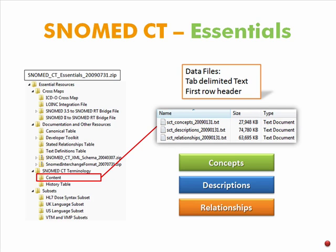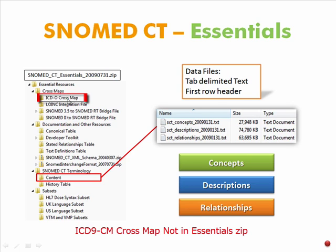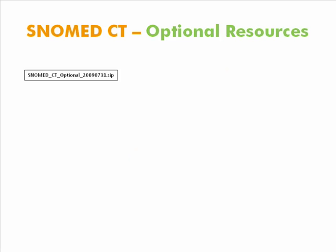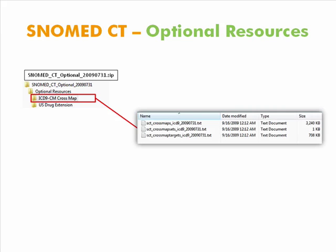One of the most important things to note is there are files provided by the NLM that have maps or cross-references from SNOMED CT to ICD-9-CM. It is not in the SNOMED CT Essentials file that we covered last time. In fact, there is something called the ICD-0 cross-map, and it has some cross-map files in there, but those are not ICD-9-CM — that is a different coding system used for oncology. If you want to look at the sources available to go from SNOMED CT to ICD-9-CM, that is in another file at the same download page as the Essentials zip file, called the Optional Resources zip. When you download this, it unzips into the structure you see here, and one of the things under Optional Resources is the ICD-9-CM cross-map directory. If you open that up, you're going to see three files, which represent a standard SNOMED cross-map structure.